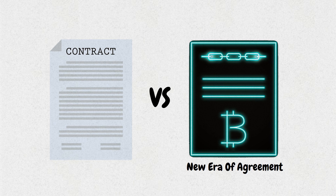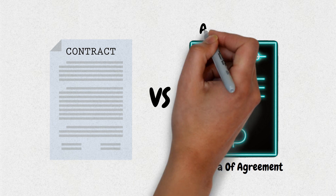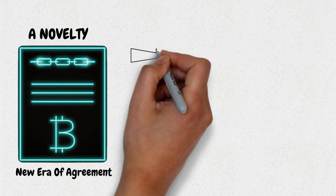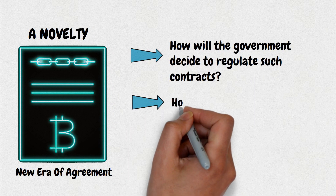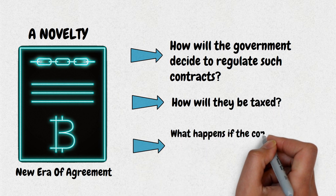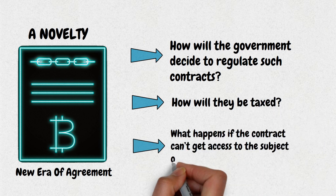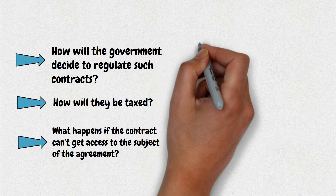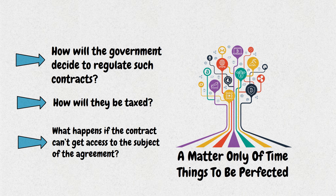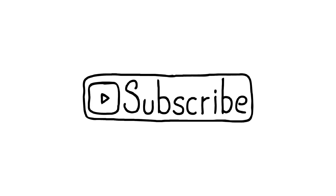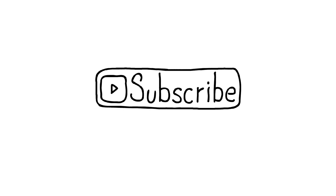Conclusion: the difference between the two types of contracts shows us that a new era of agreement is coming. Smart contracts are still considered a novelty and many questions remain unanswered — how will governments regulate such contracts, how will they be taxed, and what happens if the contract can't access the subject of the agreement? But seeing how the technology evolves, it seems only a matter of time before things are perfected. Smart contracts are surely turning the hype into reality and will become part of our everyday life.